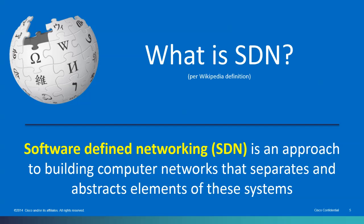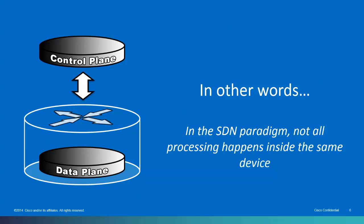With SDN, all we're really talking about is separating the control from the data plane. You're pulling the control plane out and in most cases it's centralized. You have the capability with open APIs to have applications communicate on the northbound interface of the control plane, and then there's typically a southbound interface where various protocols give commands from the control plane to the data plane to actually forward packets.